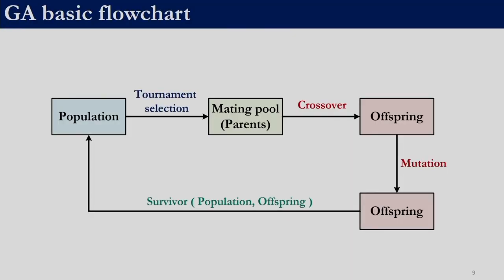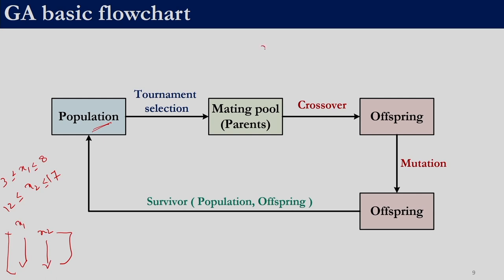This is the basic flowchart of genetic algorithm. We start with an initial population. For other techniques, with variables x1 and x2 between given bounds, the population had two columns. In the case of genetic algorithm, if we choose to represent each variable by a bit length of 4, the population will consist of only 1s and 0s despite the fact that our decision variables are real-valued. The population would be completely binary. How we move from real variables to binary and back is something we have previously seen.